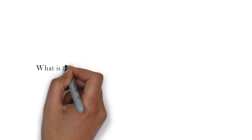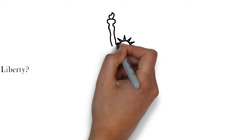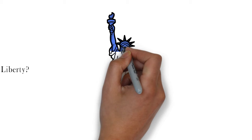Hello friends, welcome to the Curiosity Channel. Today's question is: what is the meaning of the seven spikes on the Statue of Liberty? If you know the answer to this question, please drop your answer in our comment section.